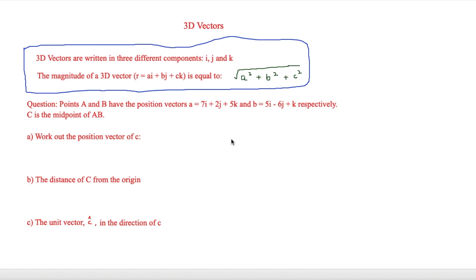This is Simon Stark and in this video we are looking at 3D vectors. So 3D vectors are written in three different components instead of two, and these are i, j which we normally have, and then an extra k which adds its third dimension. The magnitude of a 3D vector is equal to root a squared plus b squared plus c squared, so it's Pythagoras' theorem, however there's three components within it.